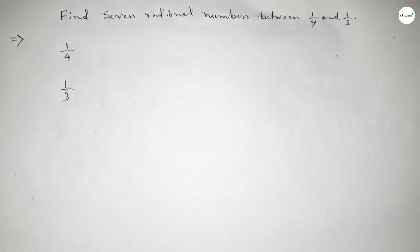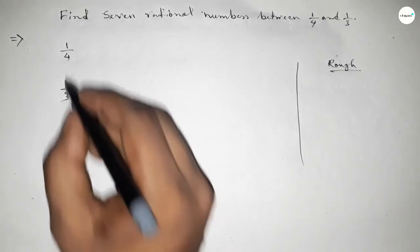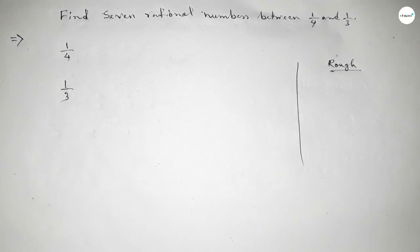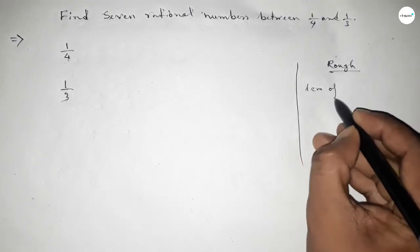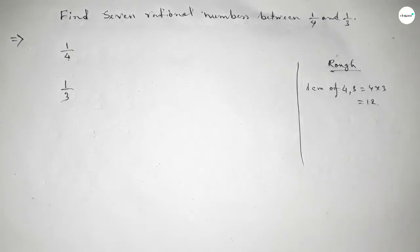Now, let's discuss some important notes here. The denominators of both are not equal, so first we have to find out the LCM of 4 and 3. Their product is the LCM, so 12.